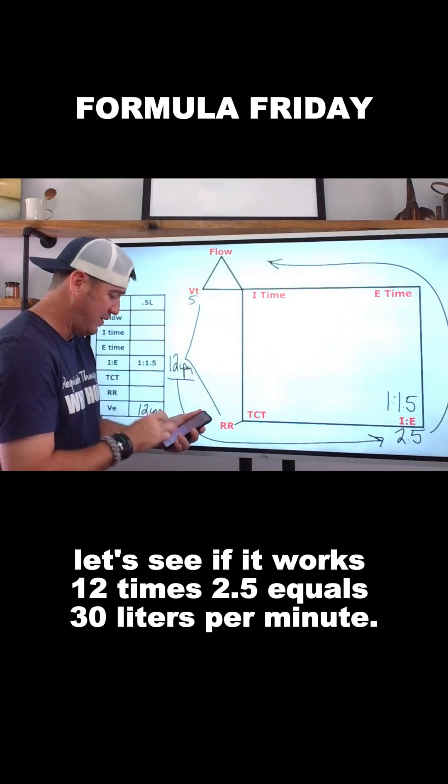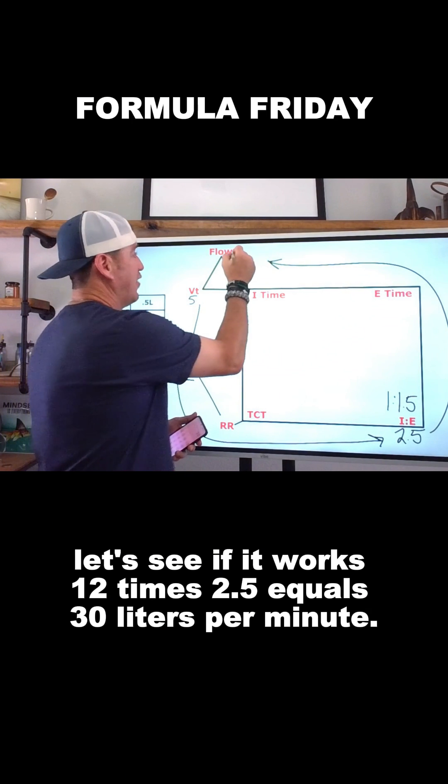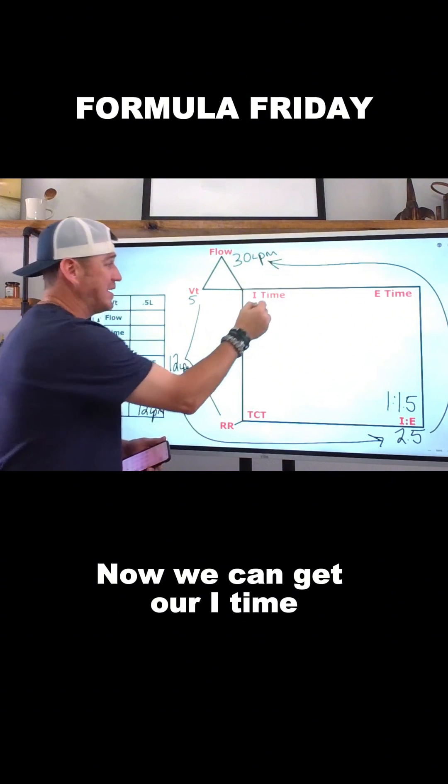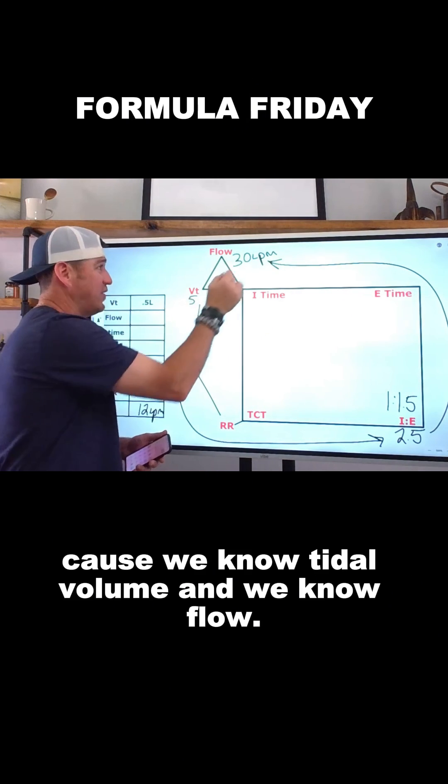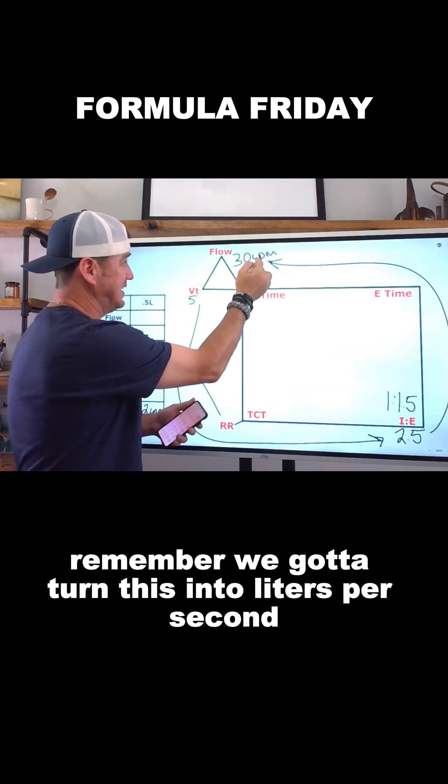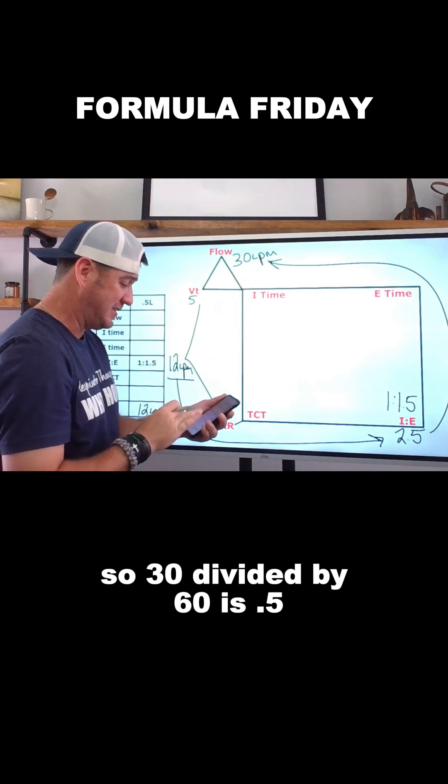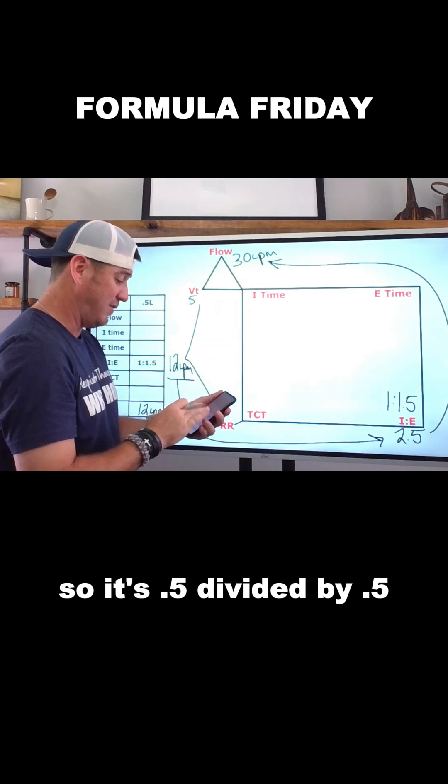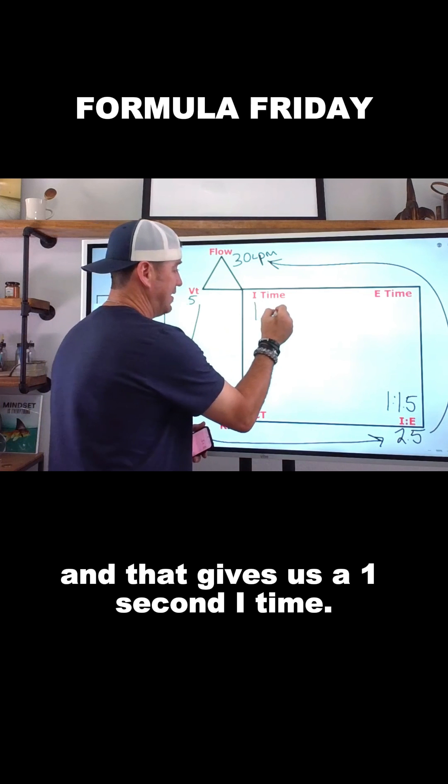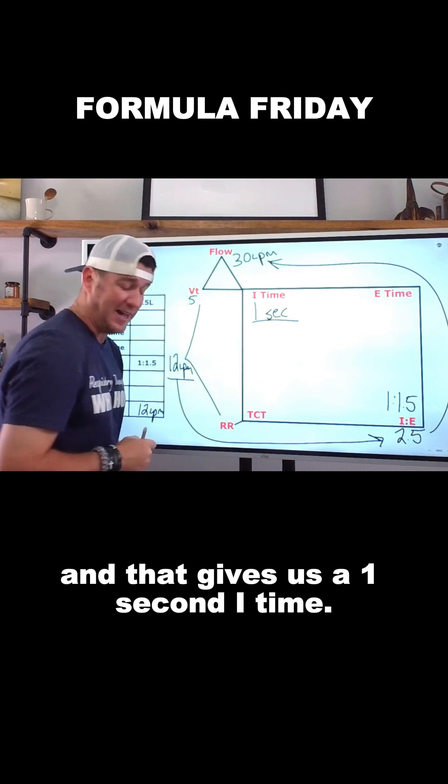12 times 2.5 equals 30 liters per minute. Now, we can get our I time because we know tidal volume and we know flow. So now we do tidal volume. Remember, we got to turn this into liters per second. So 30 divided by 60 is 0.5. So it's 0.5 divided by 0.5. And that gives us a 1 second I time.